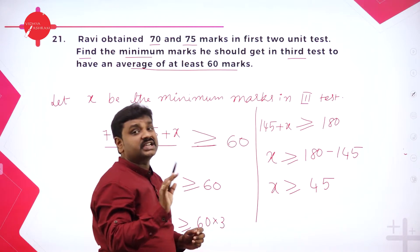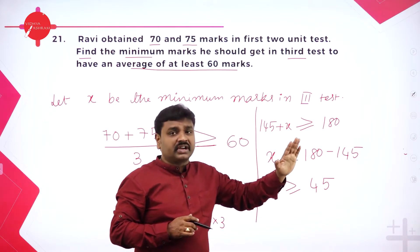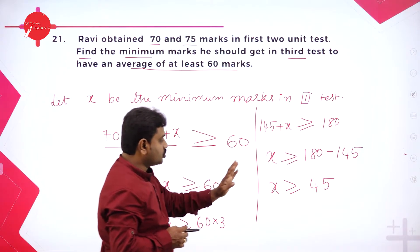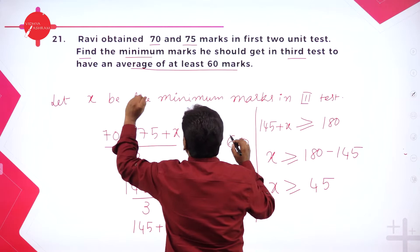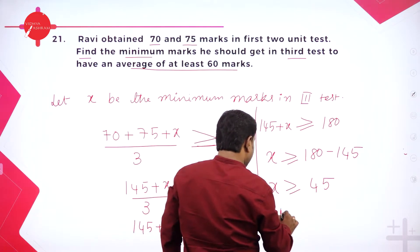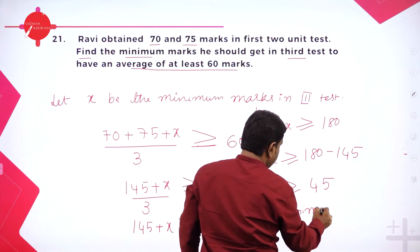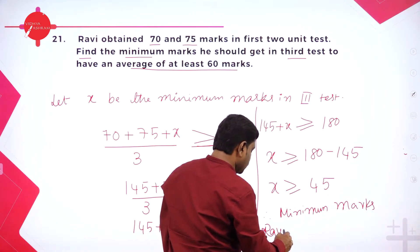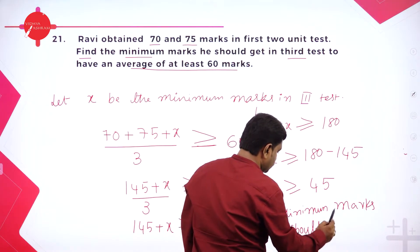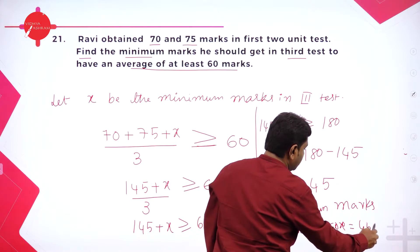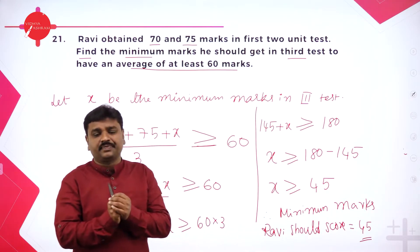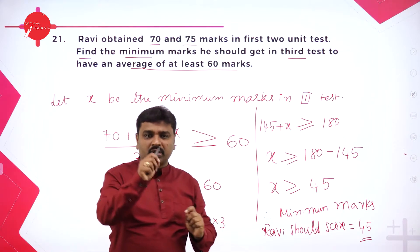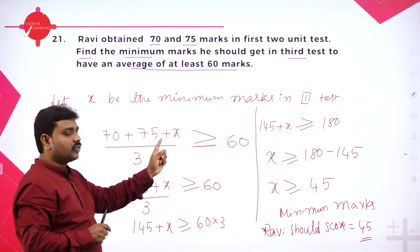Simplify: 180 minus 145 is 35... so x is greater than or equal to 35. In the third test, he should at least get 45. If he gets 45 or more than 45, then his average will be 60 or more than 60. At least 60 means the average should be 60 or more, so minimum marks he should score is 45. Therefore, minimum marks Ravi should score is equal to 45. The minimum marks required is 45. Read it, write the inequality, and solve the inequality.